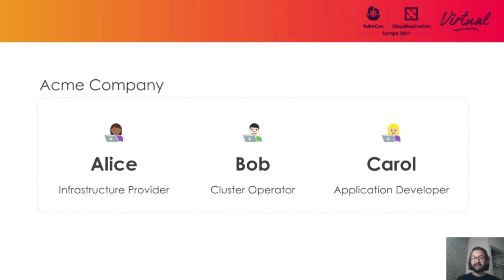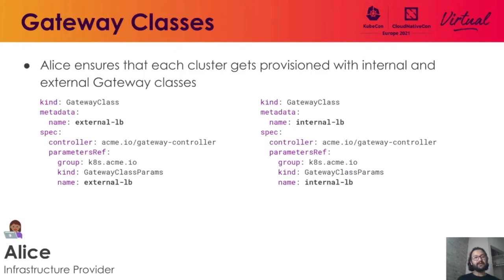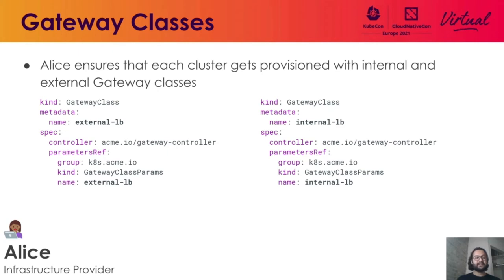Now let's see how Alice, Bob, and Carol use Gateway API to deploy their application. First, when Alice creates new Kubernetes clusters, she ensures that each cluster gets provisioned with two gateway classes: an external LB and an internal LB. A gateway class is a way to abstract away a type of load balancing infrastructure that is available within the cluster. External LB and internal LB represent a kind of load balancing infrastructure, and these two gateway classes are being controlled by a controller called acme.io/gateway-controller.